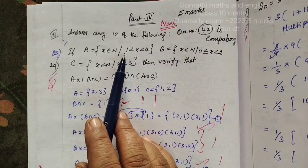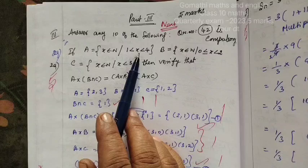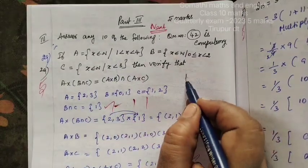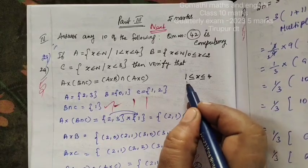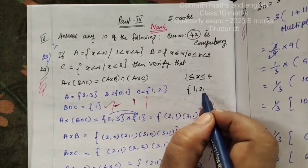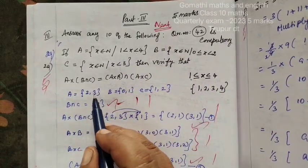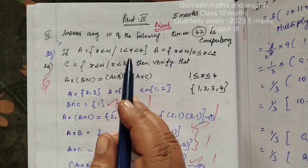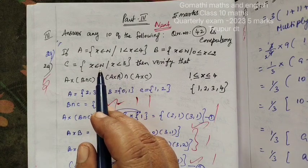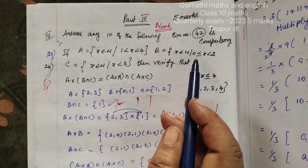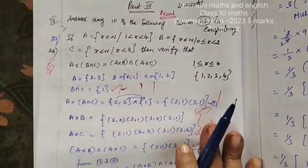X belongs to Natural Numbers: 1, 2, 4 is equal to 4; 2 is equal to 3. Suppose we consider 1, 2, 3, 4 — but it is not an equal-to sign, so you are taking only 2 and 3. This means between: X less than 3 — less than 3 gives 1, 2, 1. Natural Numbers has no 0. So A, B, C and 3 in Roster Form.